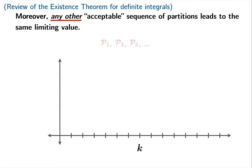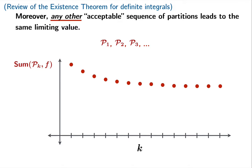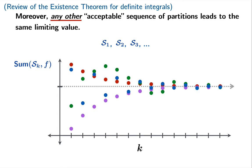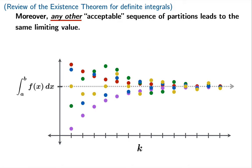In this graph we might build a sequence of decorated partitions and plot the associated sequence of Riemann sums. If the sequence of decorated partitions is acceptable — meaning its corresponding partition sizes go to zero — then the limiting value of Riemann sums is guaranteed to exist. Any other acceptable sequence of partitions leads to the same limiting value, no matter which acceptable sequence we build for the sub-interval. The common limiting value is what we define to be the definite integral of f on the interval from a to b.